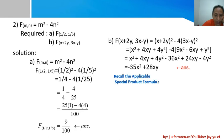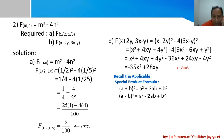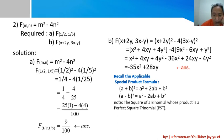Let me recall the special product formula for binomial squares, since this may be a source of confusion. For a binomial square (a + b)²: the first term is a², the middle term is 2ab, and the last term is b². For (a - b)²: the expression is the same but the middle term is negative: a² - 2ab + b². A binomial square always produces a perfect square trinomial (PST).